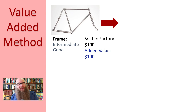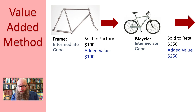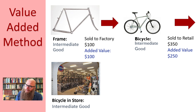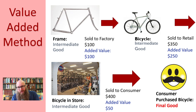Now let's do the value-added method. Let's start with a bike frame — it's an intermediate good, and it gets sold to a factory for $100. The value added in this step is $100. The factory turns that frame into a completed bicycle and sells it to a retailer for $350 — $350 minus $100 means a net added value of $250. The retailer places it in a store, curates the selection, creates a helpful customer experience, provides expertise, and sells it to the customer for $400. The retail added value is $400 minus $350, or $50. GDP in this case is $400 looking at the final goods method, and it's $100 plus $250 plus $50, or $400, using the value-added method.